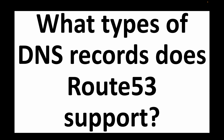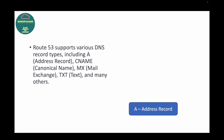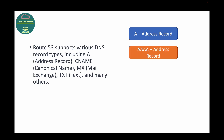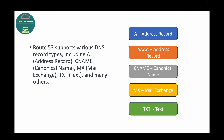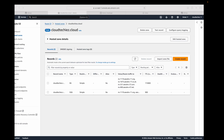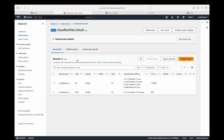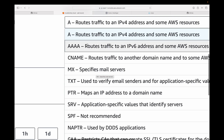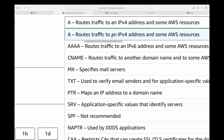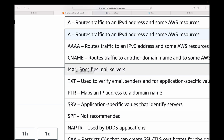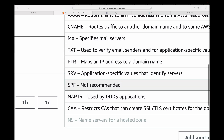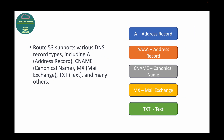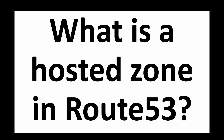Question 3: What types of DNS records does Route 53 support? There are a variety of records that Route 53 supports — we have the A record, AAAA record, CNAME record, MX record, TXT record, and many more. Here in the console, when you click 'Create Record,' you can see all the different record types: A for IPv4, AAAA for IPv6, CNAME, MX, TXT, PTR, and others. Each record type serves a specific purpose based on your use case.